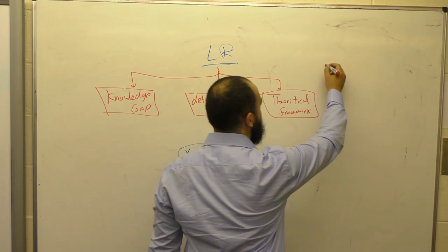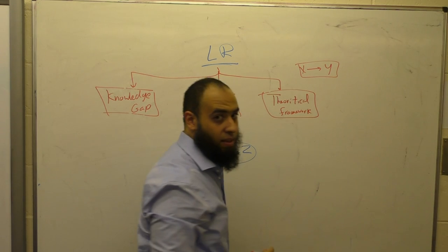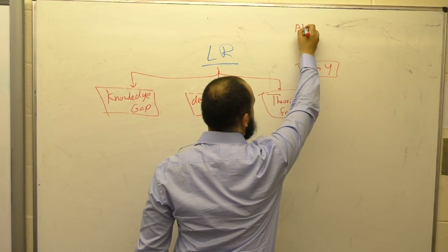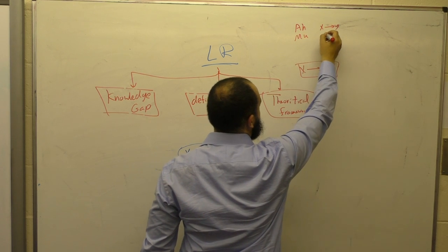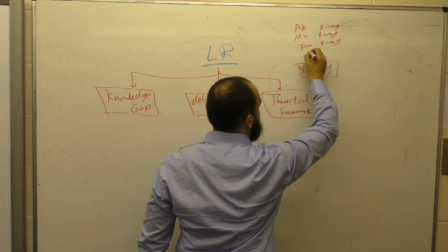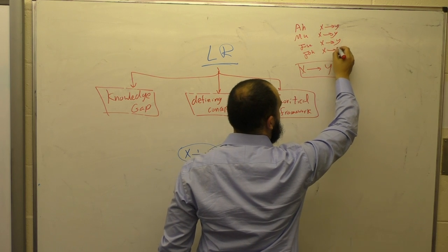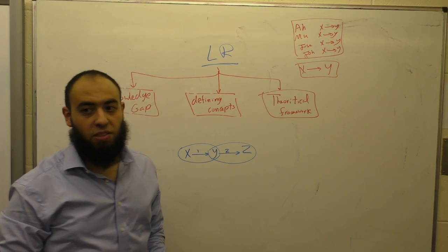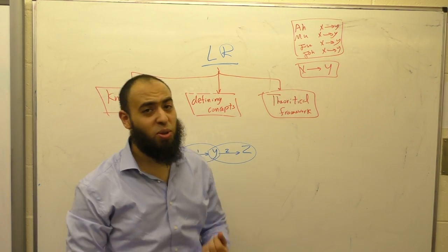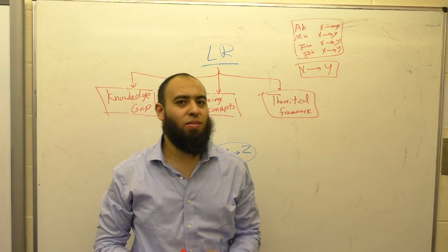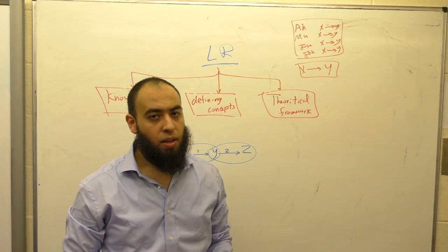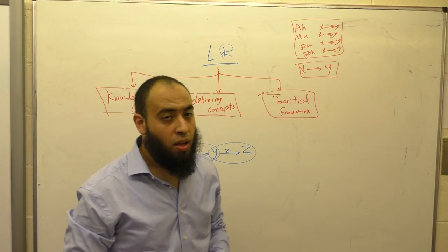The traditional approach says you need to claim X affects Y, then find ten papers that say X affects Y. Ahmed says X affects Y, Mohammed says X affects Y, Jose says X affects Y, John says X affects Y — and since all these people believe X affects Y, you claim X affects Y. But what is the contribution to knowledge here? Nothing. It's a common approach but intellectually weak.